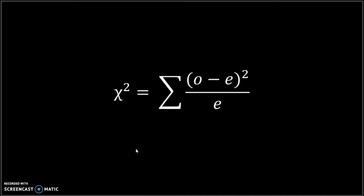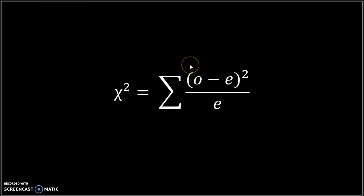Many biology classes use the chi-squared statistical test for their heredity units. Chi-squared can help determine if expectations match reality. The variables for a chi-squared calculation are expected values and observed values. The observed values come from collected data, and expected values are based on expected frequencies. We are using chi-squared to check if our hypothesized inheritance pattern appears to be correct.